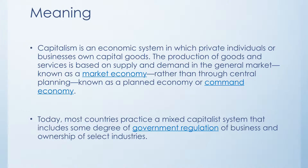Capitalistic economy is an economic system in which private individuals or businesses own capital goods. Any individual or business can have capital goods — the government will not say you cannot invest in a particular business or you cannot do a particular economic activity. You are free to own goods and do any economic activity. The production of goods and services is based on supply and demand in the general market, known as market economy. The price is not decided by the government like in a planned economy, where the government sometimes decides a minimum or support price. But in a capitalistic economy, there is no support price and no minimum price — price is decided by supply and demand.